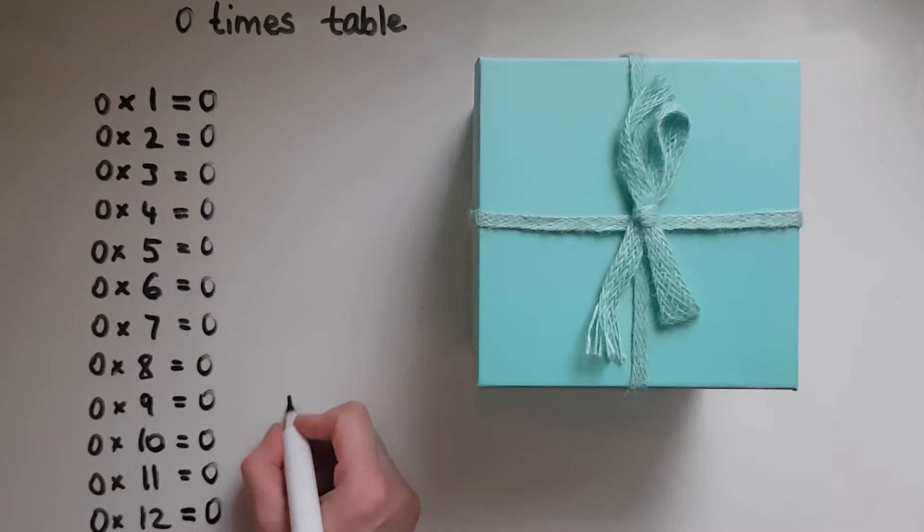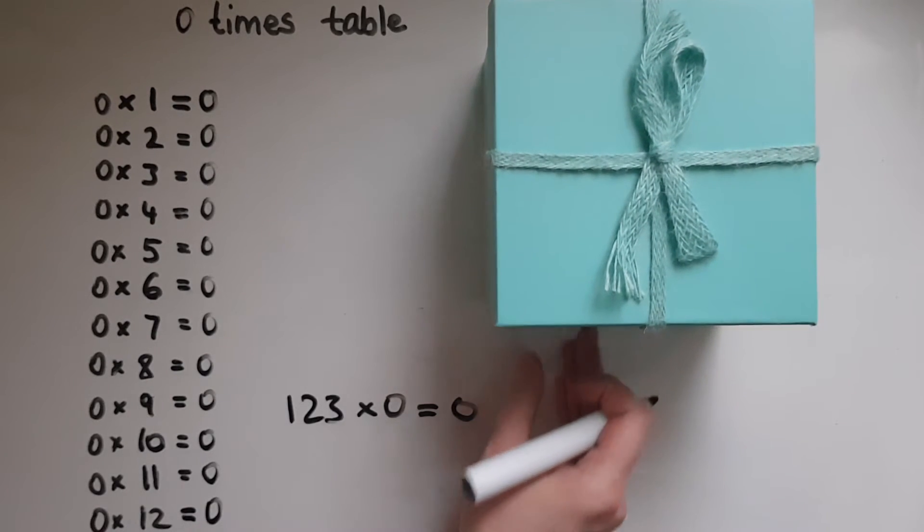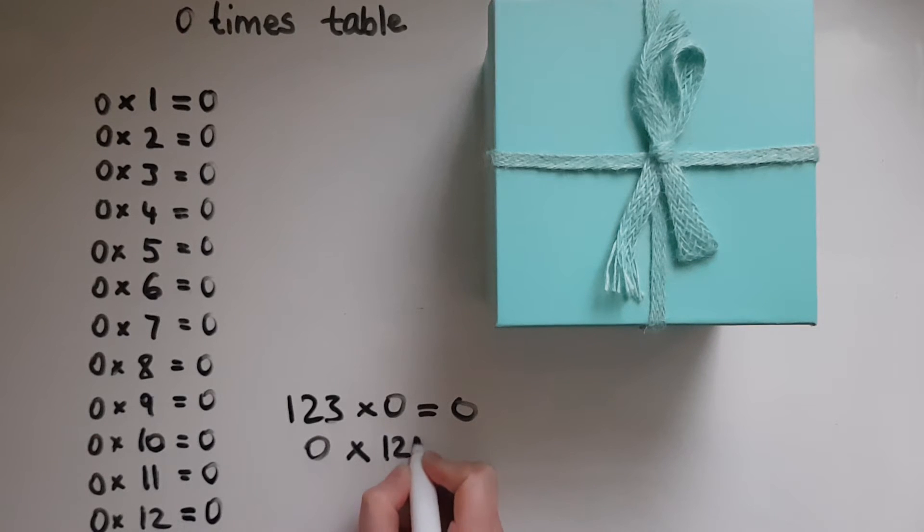So I can get any number, 123 times zero, it's going to give me zero. And as you know, I can do zero times 123 and that's going to give me zero again.